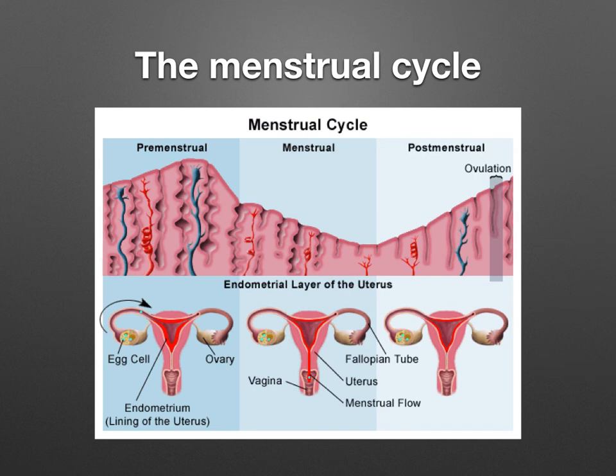The length of the menstrual cycle varies from individual to individual, and it's usually around 28 days. We're going to look at what happens to the endometrium during this time, what's happening in the ovaries, and then we're going to look at the different hormones that are involved.